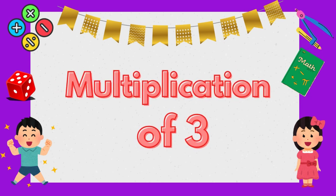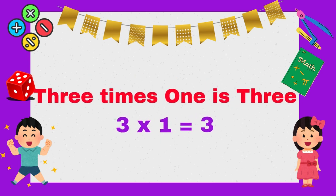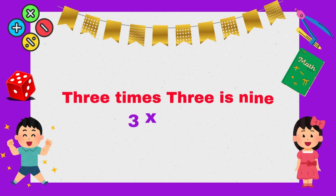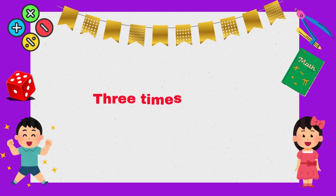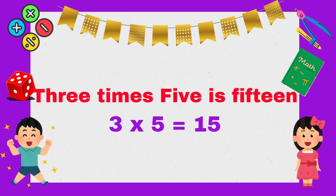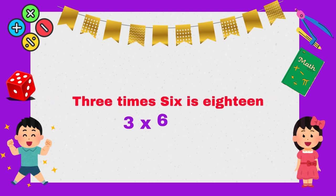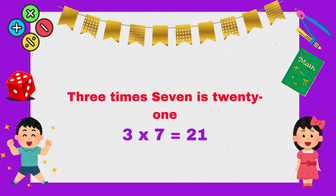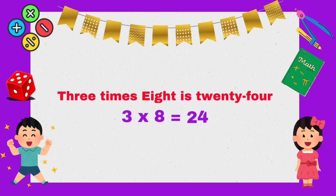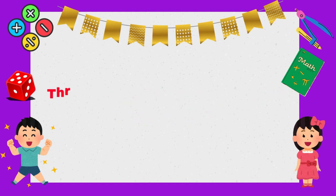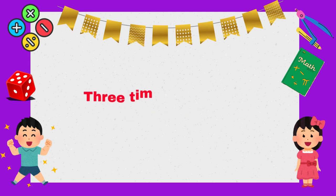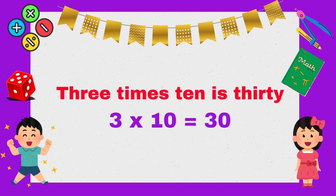Let's learn. Table of Three. 3 times 1 is 3. 3 times 2 is 6. 3 times 3 is 9. 3 times 4 is 12. 3 times 5 is 15. 3 times 6 is 18. Three times seven is twenty-one. Three times eight is twenty-four. Three times nine is twenty-seven. Three times ten is thirty.